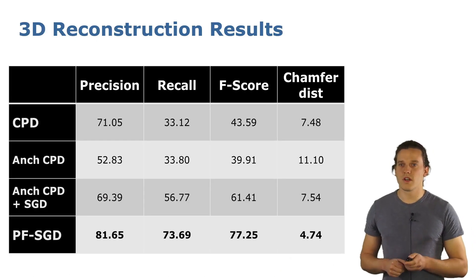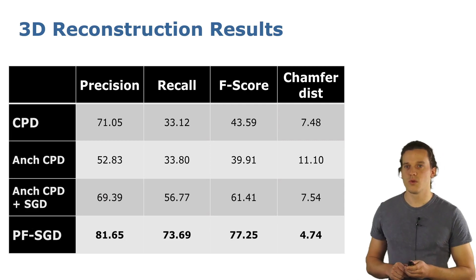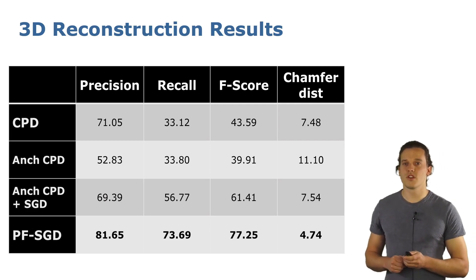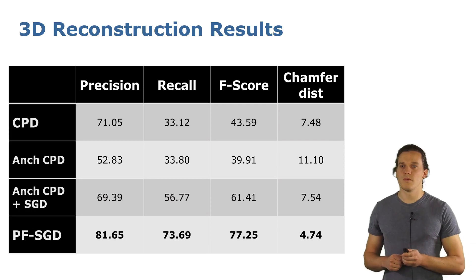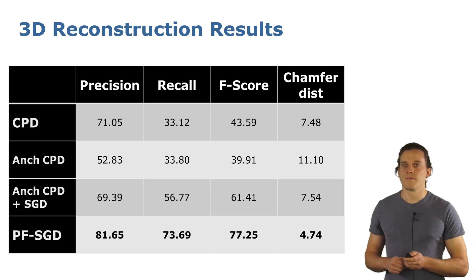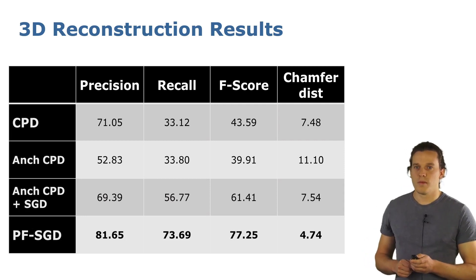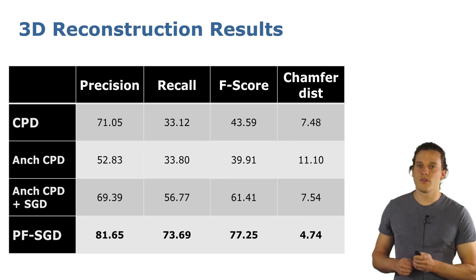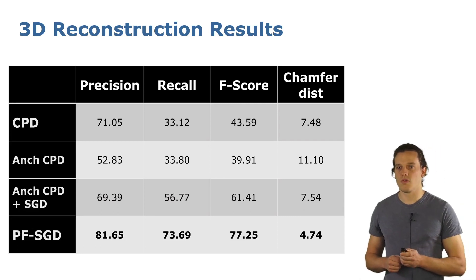To compare the reconstruction performance of our approach to existing methods, we use the precision, recall, F-score, and chamfer distance metrics common in the literature. For the first three metrics, higher is better, while for chamfer distance, a good result is measured by a low value.